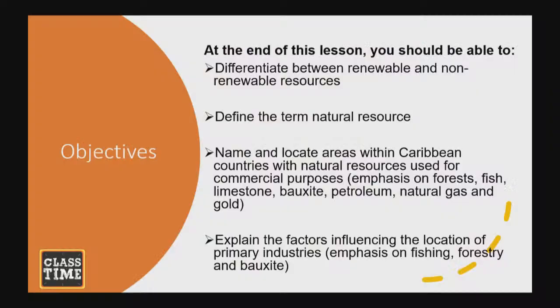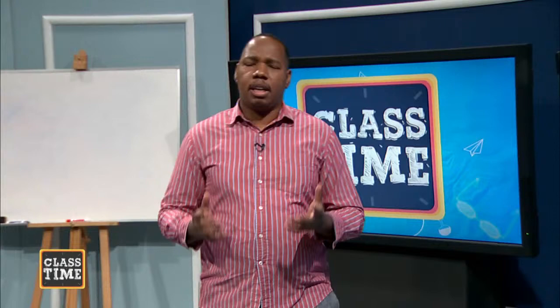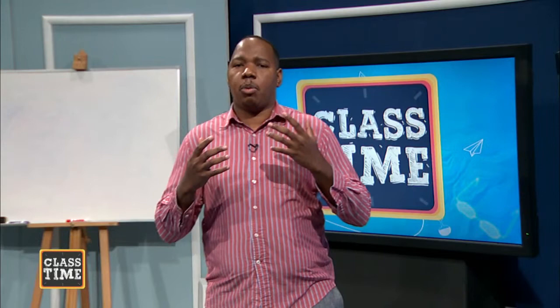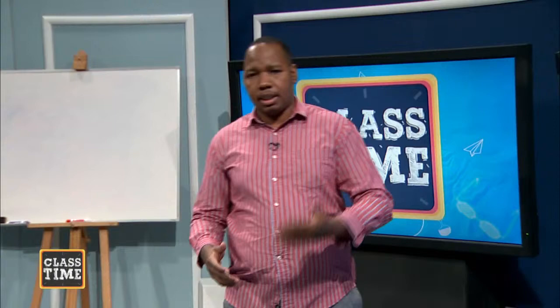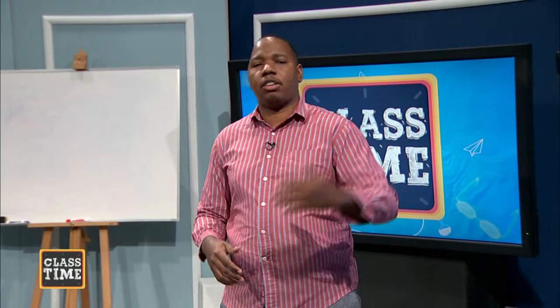More specifically, we'll be attempting to differentiate between renewable and non-renewable resources. We're going to define the term natural resources. We're going to name and locate areas within the Caribbean that have specific natural resources used for commercial purposes — things like fishing resources, forestry resources, limestone, or bauxite. Then we're going to explain factors affecting the location of these industries, with a specific focus today on primary industries. We will finalize the lesson by looking at sustainability and the extent to which practices in our Caribbean region represent sustainable extraction or sustainable use of these resources.